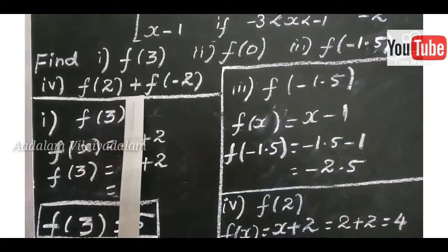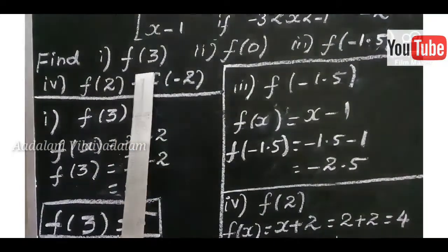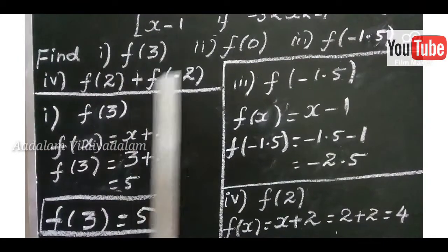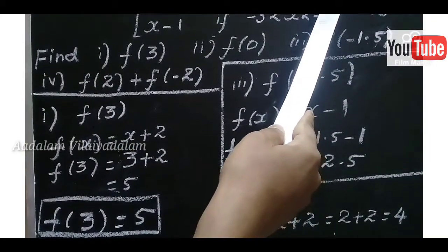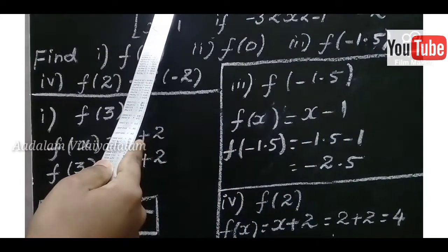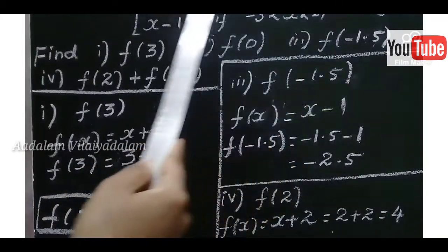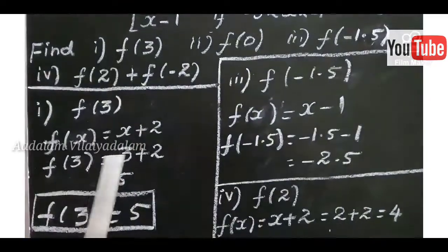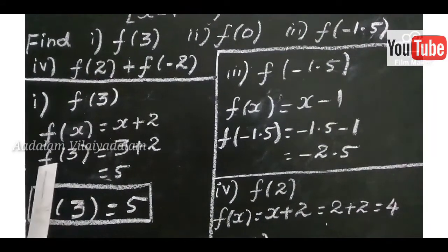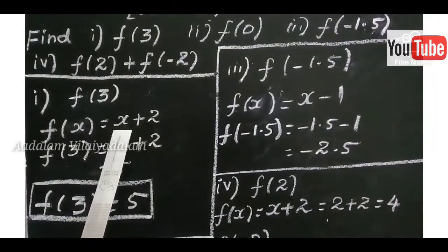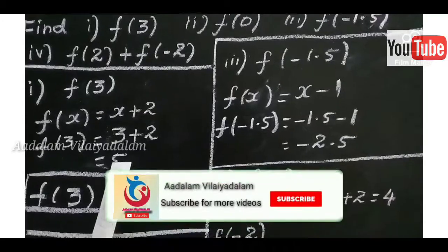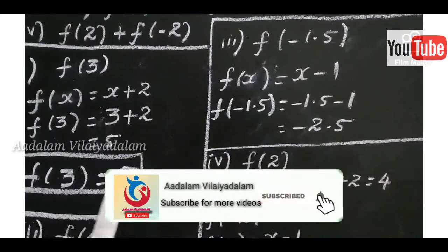First question: F of 3. Here X equals 3, which falls in the first function where X greater than 1. The corresponding function is F of X equals X plus 2. We substitute X equals 3: F of 3 equals 3 plus 2, the answer is 5. So F of 3 equals 5.